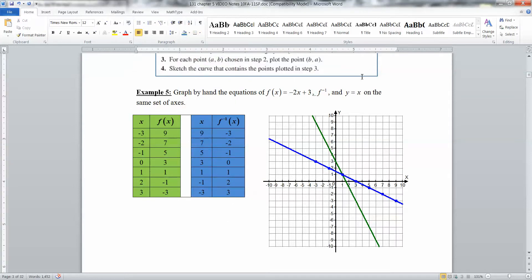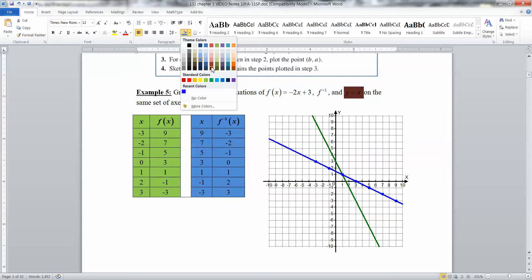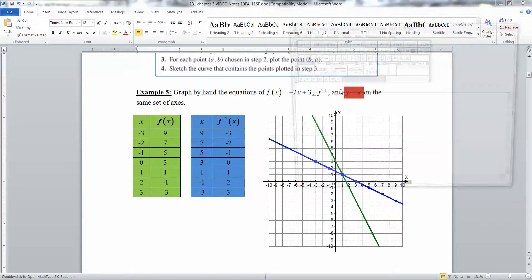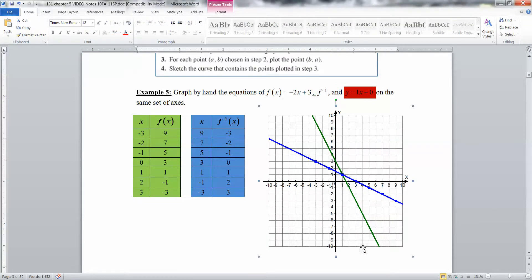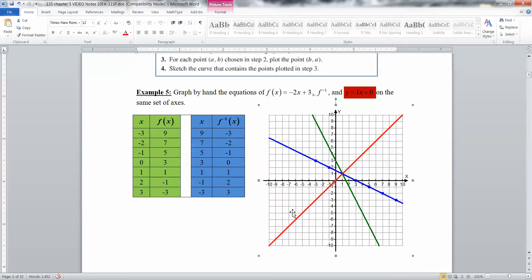Now I also want to graph the line y equals x. Remember, y equals x is a line. Because it's y equals mx plus b. So y equals x, the slope is 1. Because it's 1x plus b, but there's no b, so it means plus 0. So this is essentially the same thing as 1x plus 0. You're going to start at 0, and then go up 1 over 1, up 1 over 1, up 1 over 1.